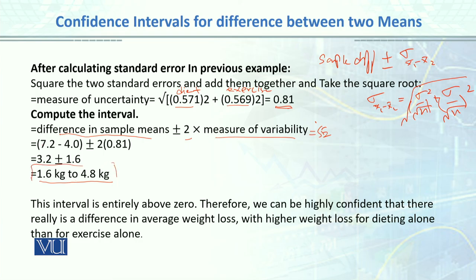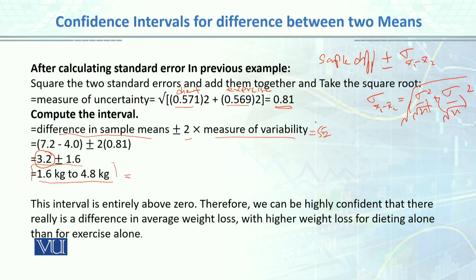The confidence interval for the difference between our two sample means is between 1.6 and 4.8 kg. In our sample, the mean difference was 3.2. But we cannot apply this 3.2 point estimate to the entire population, so instead we form a confidence interval. We can now say that if you use diet or exercise, the difference in the entire population could be between 1.6 and 4.8 kg.